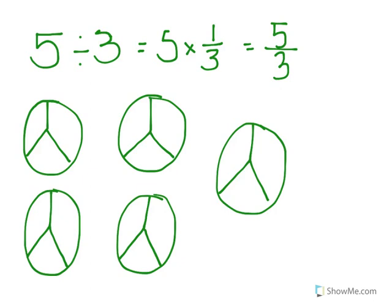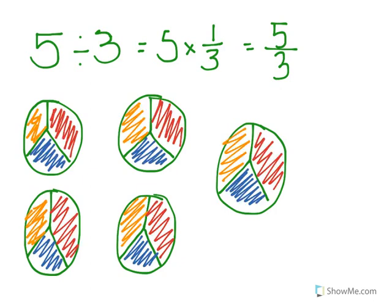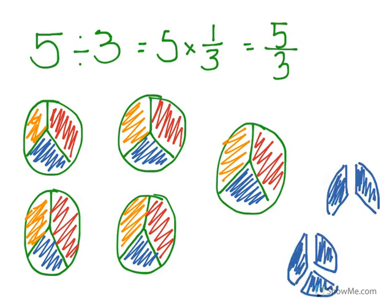Now that we've cut the 5 pizzas into 3 equal parts, we can go ahead and share each of those pieces amongst the 3 friends. We now have a total of 15 pieces and we have to divide it so that each of those 3 people has an equal amount. If we look at it, they've each received 5 pieces. If we put our blue friend's pieces of the pizza all together, we will see that he has 1 whole pizza and 2 thirds of a pizza.